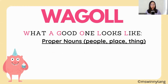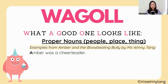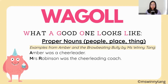Here's an example of proper nouns — people, places or things. 'Amber was a cheerleader.' Amber is a name, and it's also at the beginning of the sentence, so it's an example of both a proper noun and the beginning of a sentence. 'Mrs. Robinson was the cheerleading coach.' Mrs. Robinson is a character's name, so we have a capital M and a capital R, and we also have full stops at the end of these sentences.